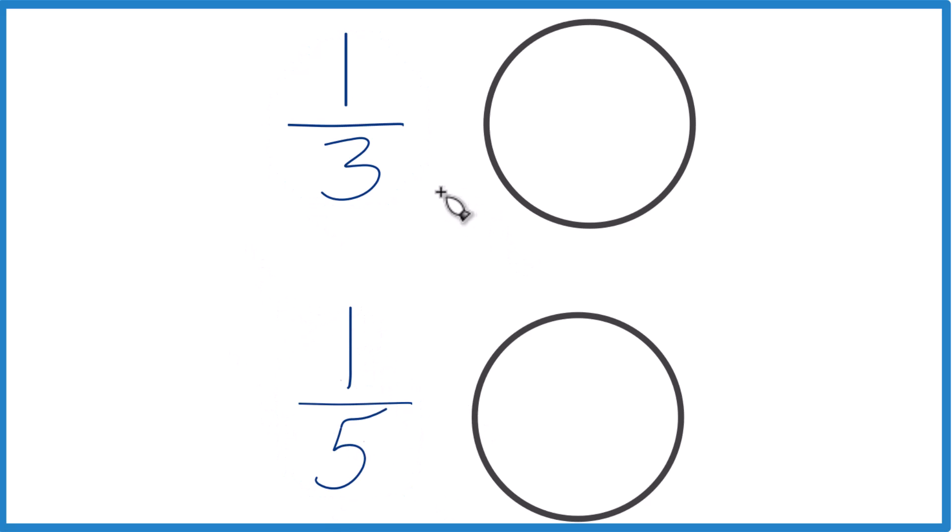So the first way you could think about this is let's divide this into three pieces. One, two, three pieces, and each piece is 1/3. I don't have it perfect, but you get the idea.